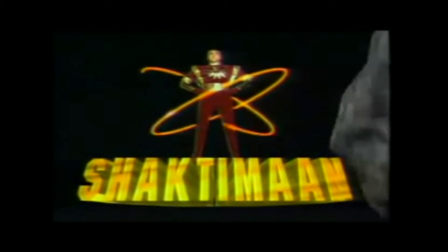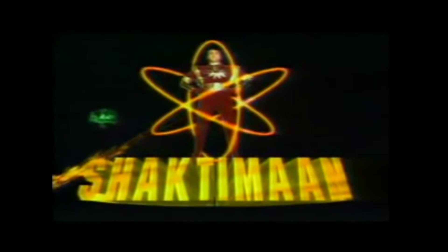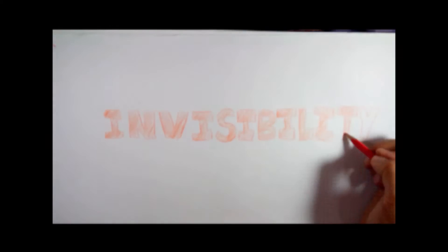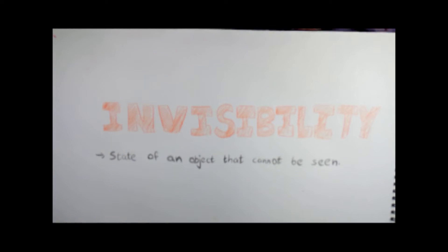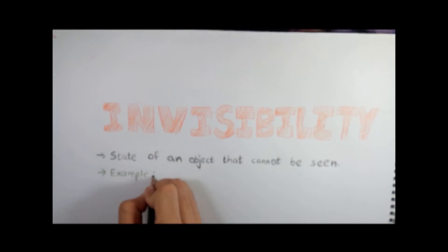But one thing which had my mind occupied in childhood was invisibility. For those who don't know, invisibility is the state of an object that cannot be seen. Air is invisible to us, so is glass to a certain extent.